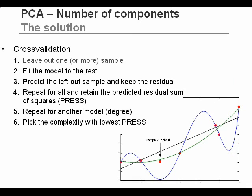What we do in cross-validation is leave out samples one at a time. Looking at the plot in the lower corner, we have taken out sample number three, and then we fit the three different models to the remaining samples. After fitting, we predict what sample three would be and compare that to the actual value. The second-degree polynomial will have a very small error, whereas both the first and sixth degree will have high errors. We do that for all the samples — take out a sample, calculate the model, predict the left-out sample — until all samples have been left out once. We get a sum-squared error for all the different models and simply pick the model with the lowest error, which in this case would be the second-degree polynomial.